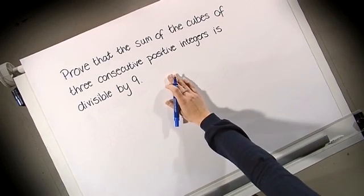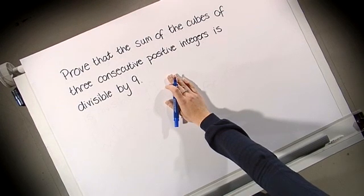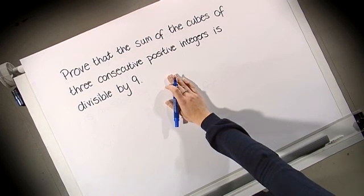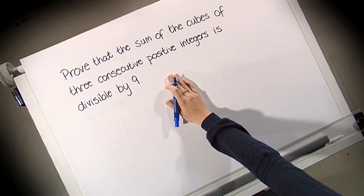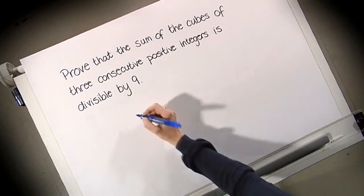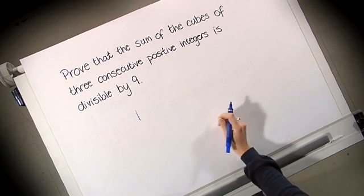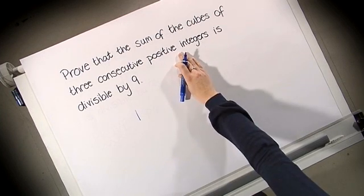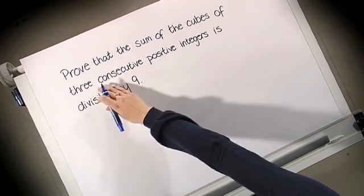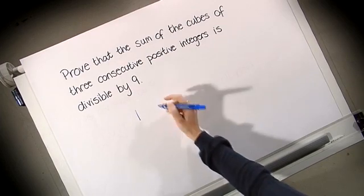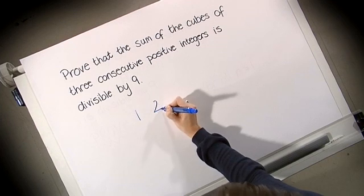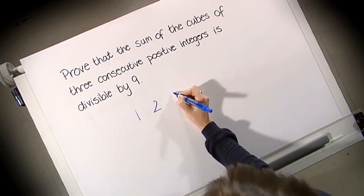So let my example be this. We want to prove that the sum of the cubes of three consecutive positive integers is divisible by nine. To begin with, let's just take an arbitrary example. So let me begin with the number one. One is my first positive integer. We need three consecutive positive integers. So the next number would be two and the one after that, three.